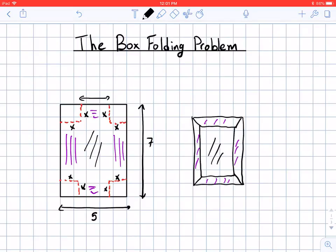It started with length 5 along that side but I got rid of X on one side so I subtract X and then I got rid of X on the other side. So in total the length is 5 minus 2X.